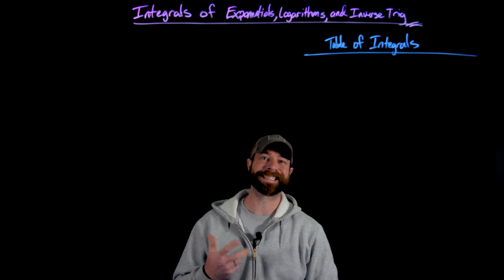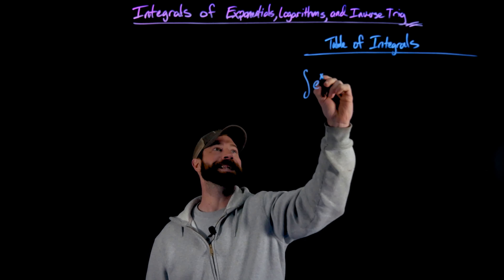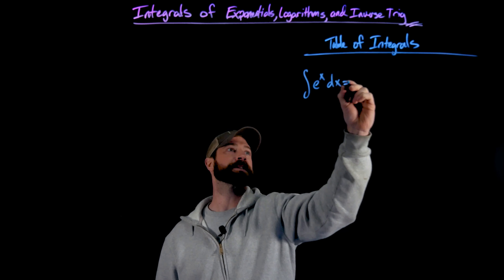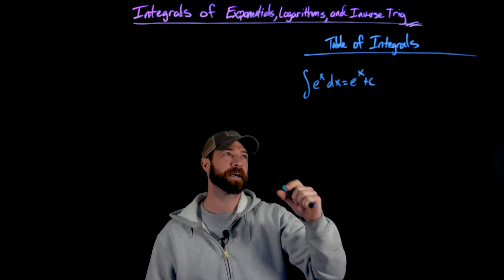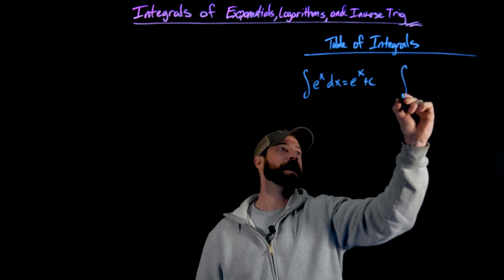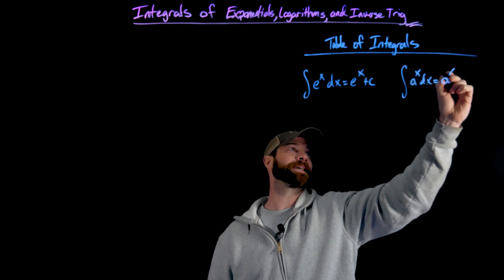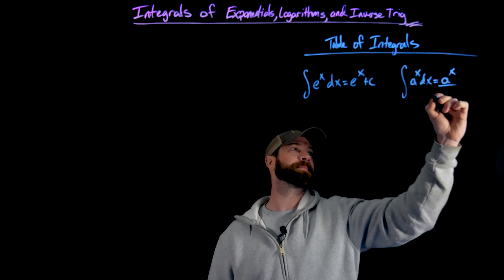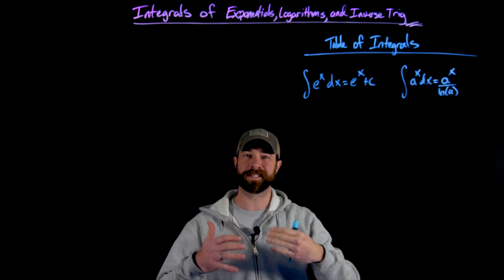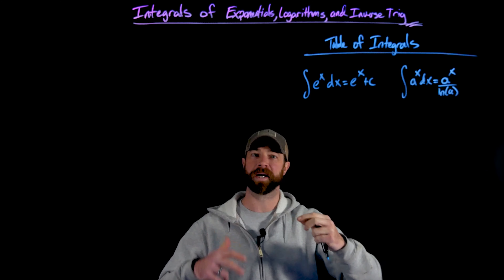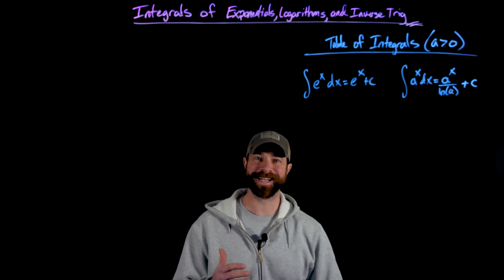These first two integrals we've already seen. We have the integral of e to the x, which just becomes e to the x — it doesn't get affected by differentiation or integration. Very similarly, if we have an exponential of a different base, what we get is a to the x divided by the natural log of a, where a is a constant value, always with plus c.